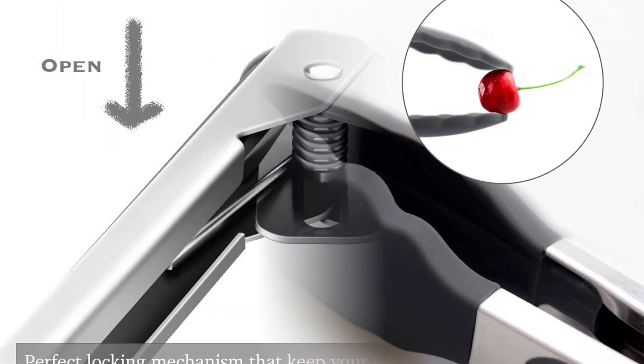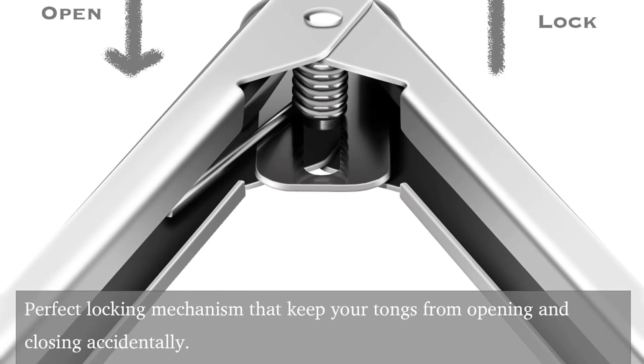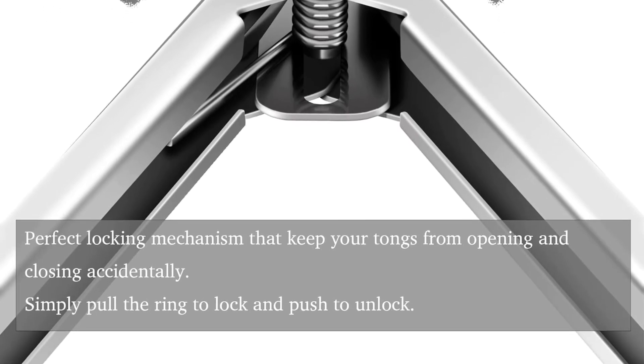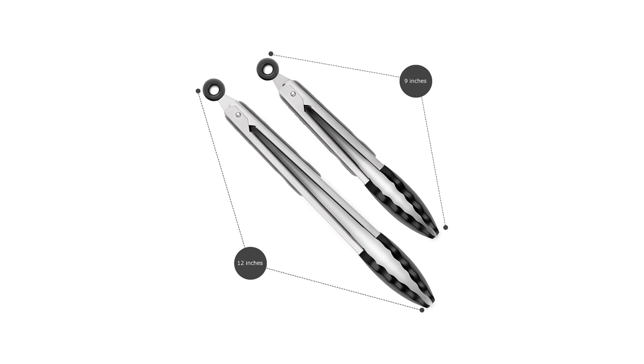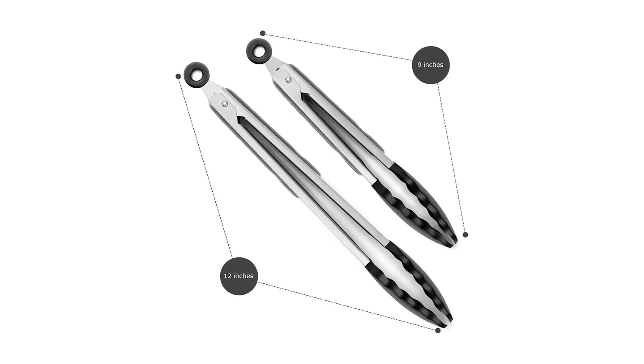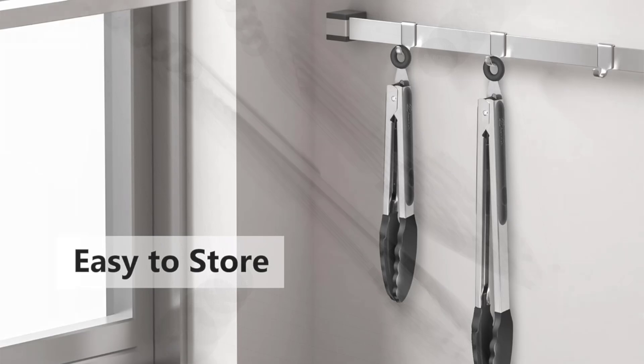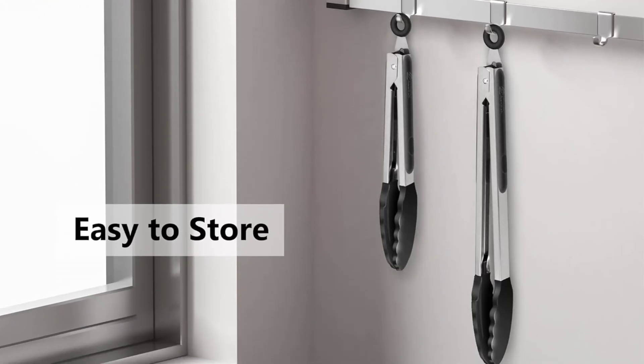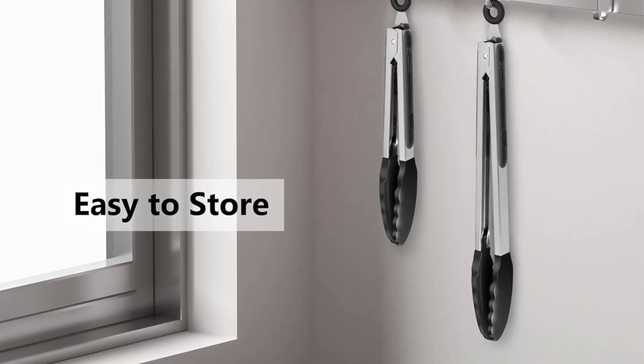The hygienic silicone tongs are BPA-free and feature a premium 304 stainless steel construction with locking clip. While the non-slip surface design provides excellent control over food, ideal for grilling and cooking, these tongs come in two sizes: 9-inch and 12-inch.